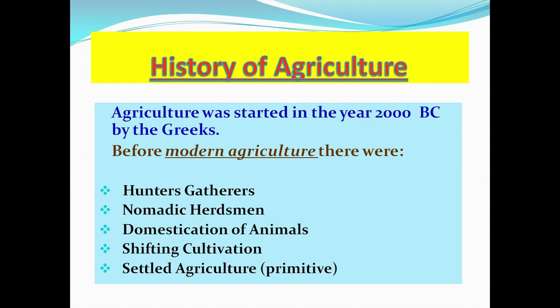Domestication of animals is where people started to settle in a home and keep animals — for example, sheep. Shifting cultivation is where persons planted crops but used the land for about three years; when the land became infertile, they moved to another area. They did not apply fertilizer back in those days. Modern agriculture now uses fertilizers and plowing to maintain soil fertility.